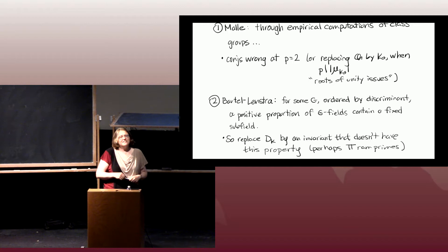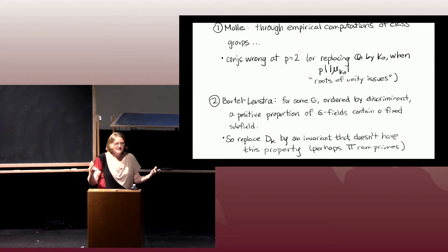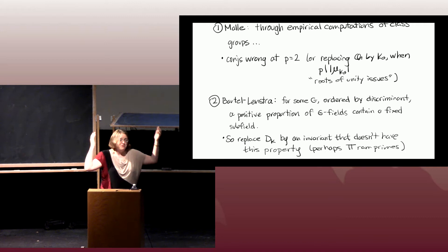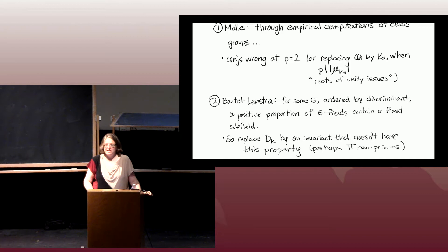Nothing in the spirit of the original heuristics or conjectures is tied to the discriminant ordering — it's more that as we look among fields, we have to order them somehow, so we order them by discriminant. The question of how different orderings affect things and which ones might be most appropriate is a really interesting one.